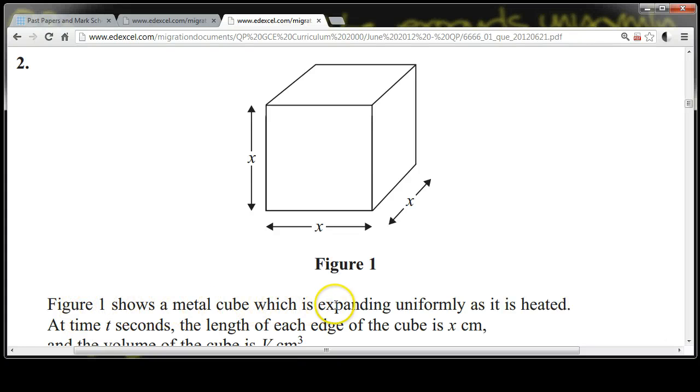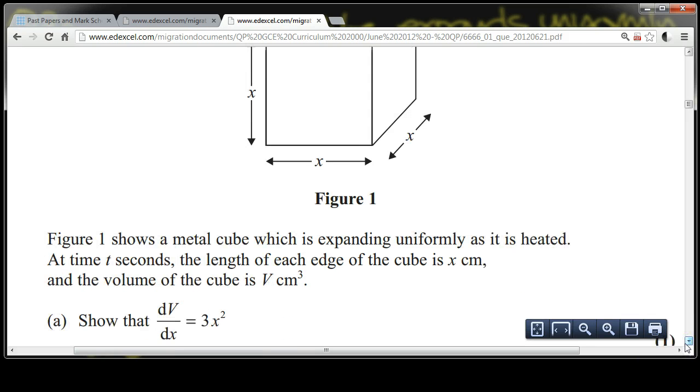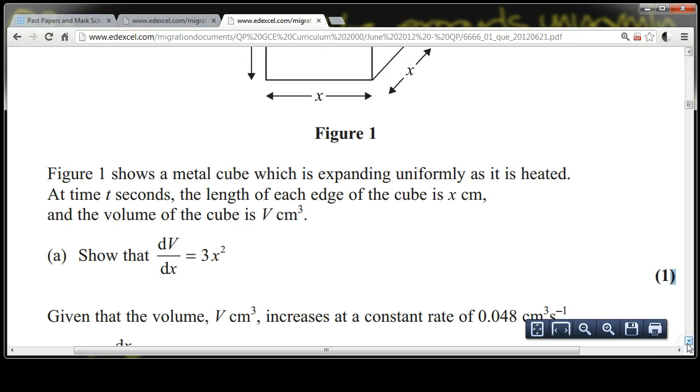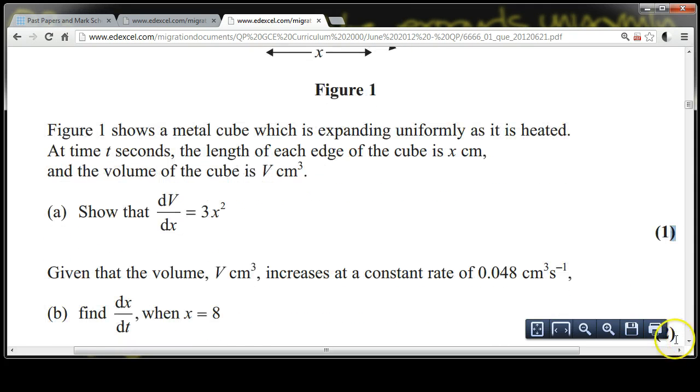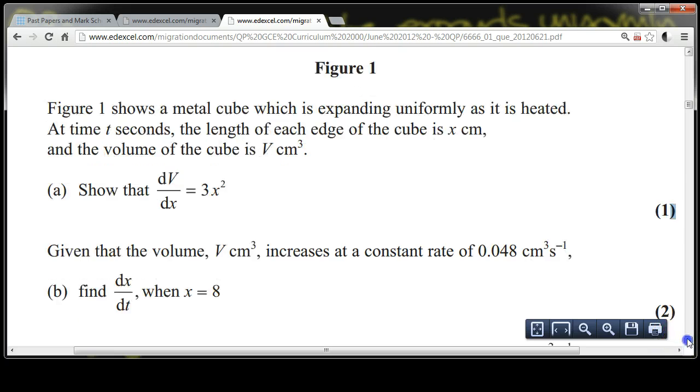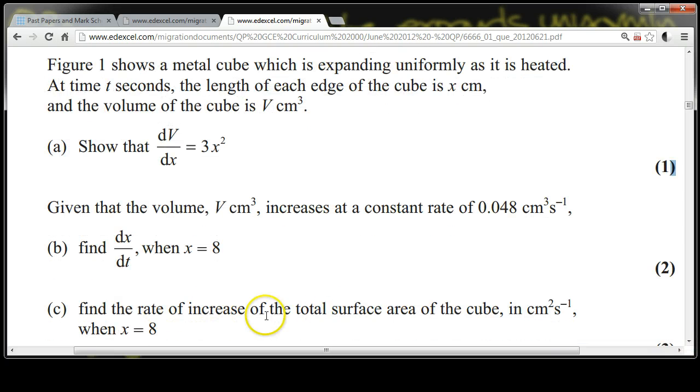Figure 1 shows a metal cube which is expanding uniformly as it is heated. At time t seconds, the length of each edge of the cube is x centimeters, and the volume of the cube is v centimeters cubed. Show that dv/dx equals 3x squared. Given that the volume v centimeters cubed increases at a constant rate of 0.048, find dx/dt when x equals 8. Find the rate of increase of the total surface area of the cube when x equals 8.